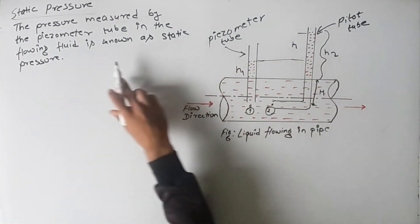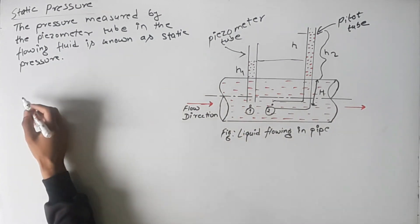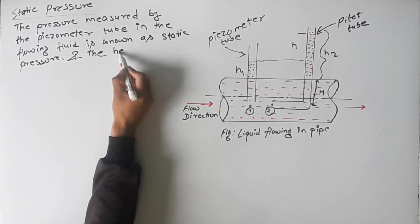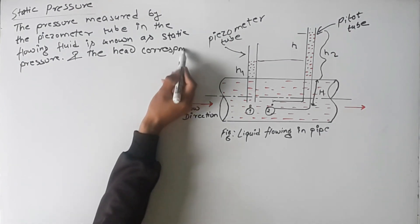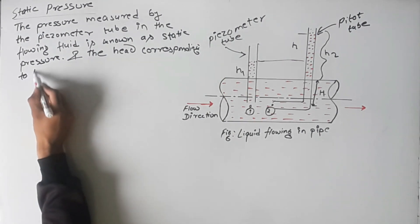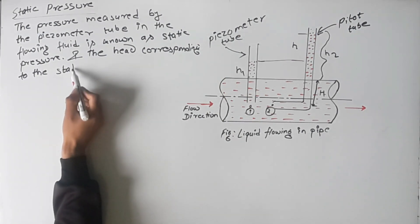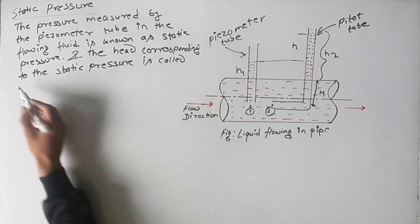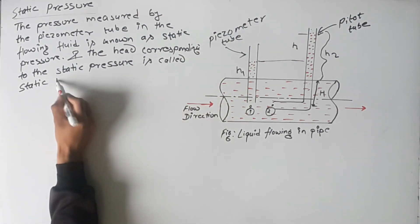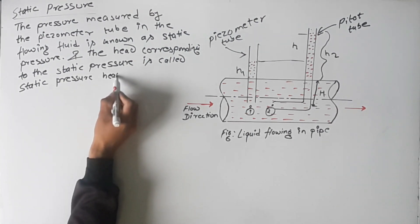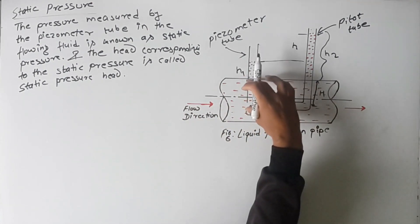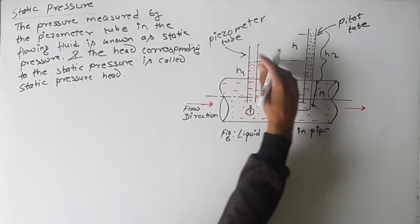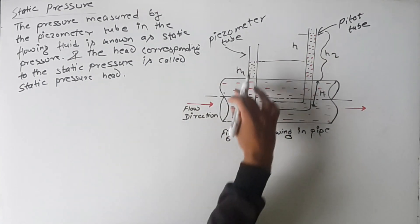The height corresponding to the static pressure is called the static pressure head. In this figure, the static pressure head is the depth in which the tube is immersed plus the portion where the liquid rises, that is S plus S1.